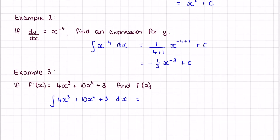For 4x³: the power is 3, so it becomes 4 over (3+1) times x to the power of (3+1). For 10x⁴: it becomes 10 over (4+1) times x to the power of (4+1). For the constant 3: remember, if you have a constant at the end of an integral, we just add x to it. The derivative of 3x is just 3, so the integral of 3 is 3x.